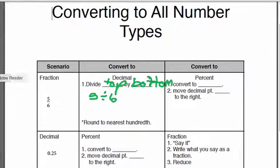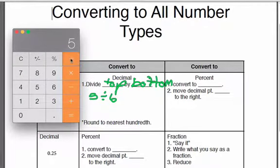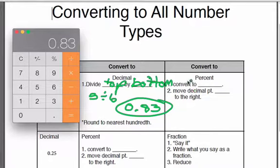Get my calculator out. In my calculator, I would do 5 divided by 6, and it gives me 0.83 or 83 hundredths. I would write down 83 hundredths. I do top divided by bottom.